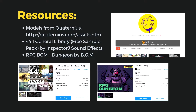We are going to use some external resources, mainly models from Quaternius. I really encourage you to check out his website because he provides models with a CC0 license, so you can reuse them and do whatever you want with them — they are free. We are also going to use two sound packs from the Unity Asset Store, which are currently free: the 44.1 General Library by Inspector J Sound Effects and RPG BGM Dungeon background sound by BGM.